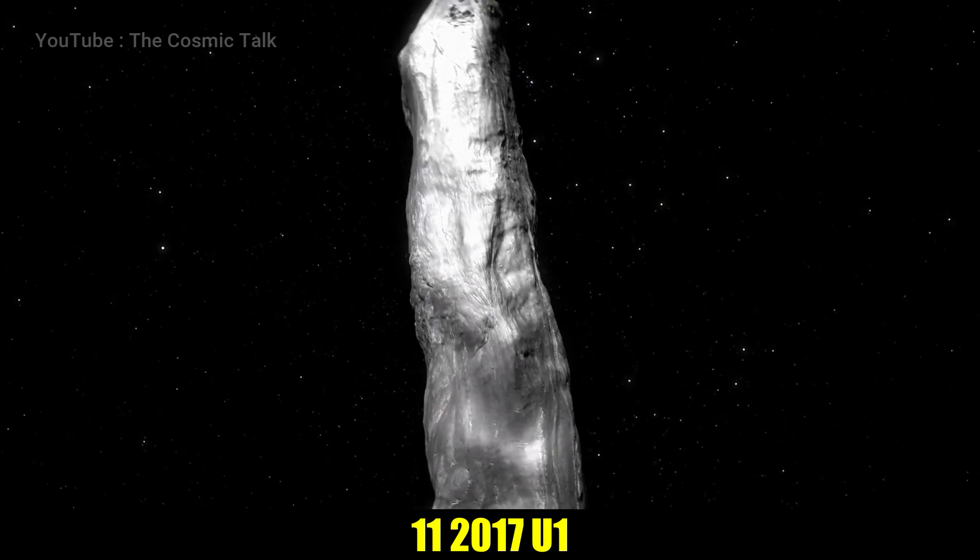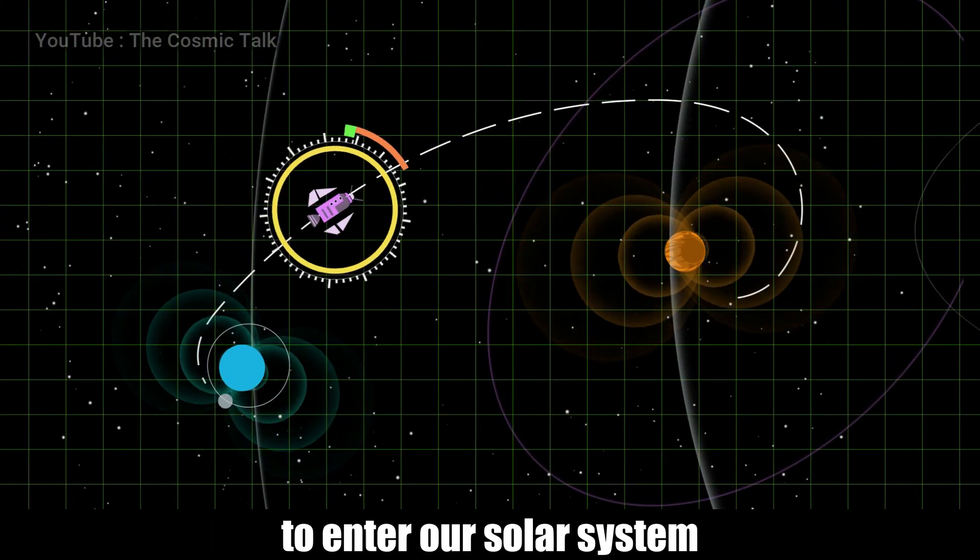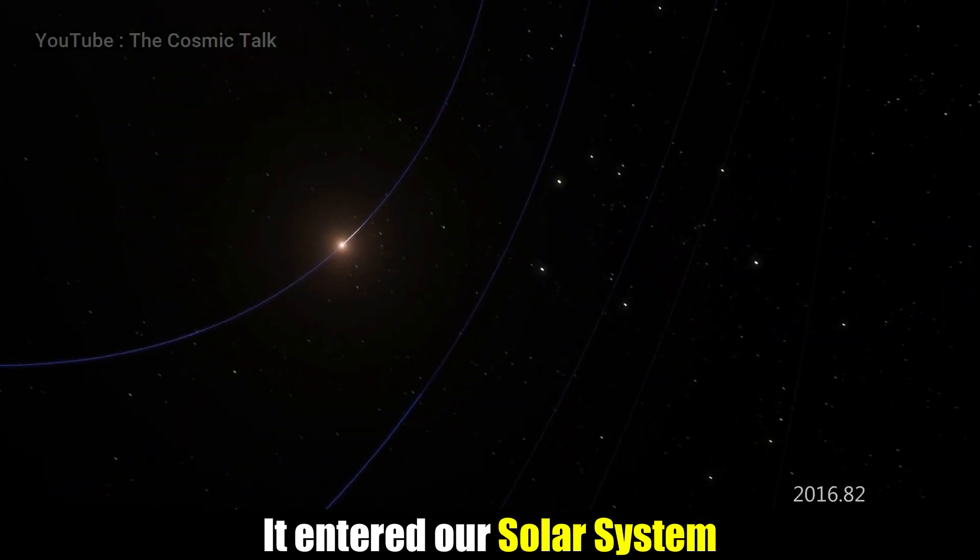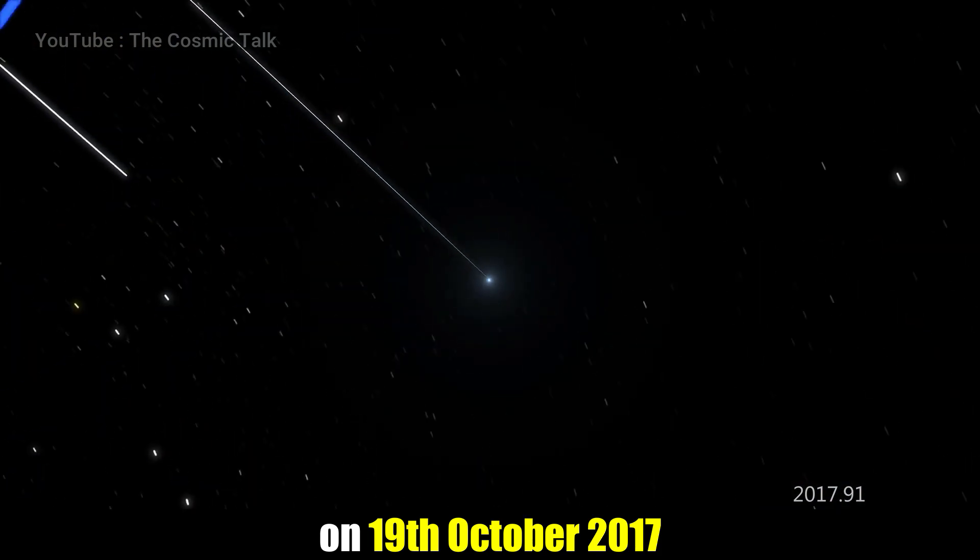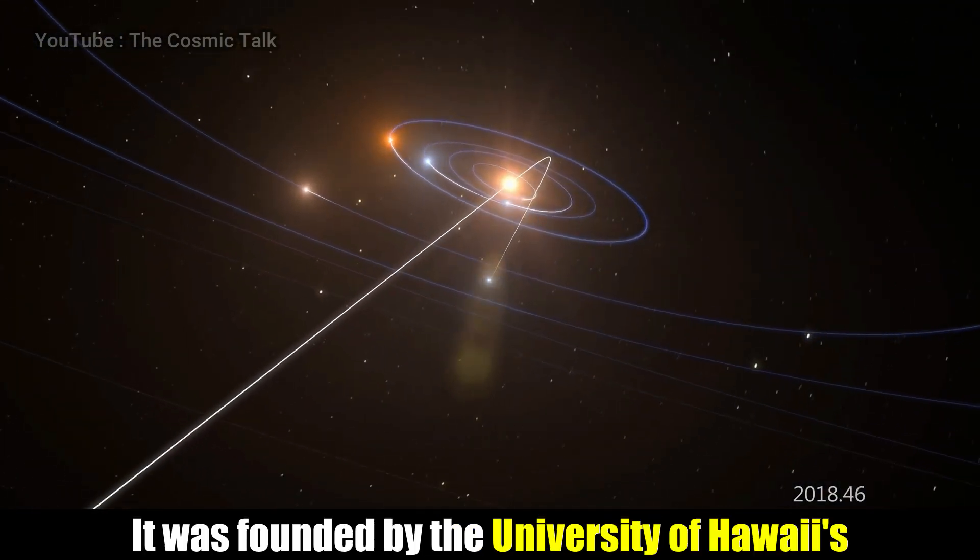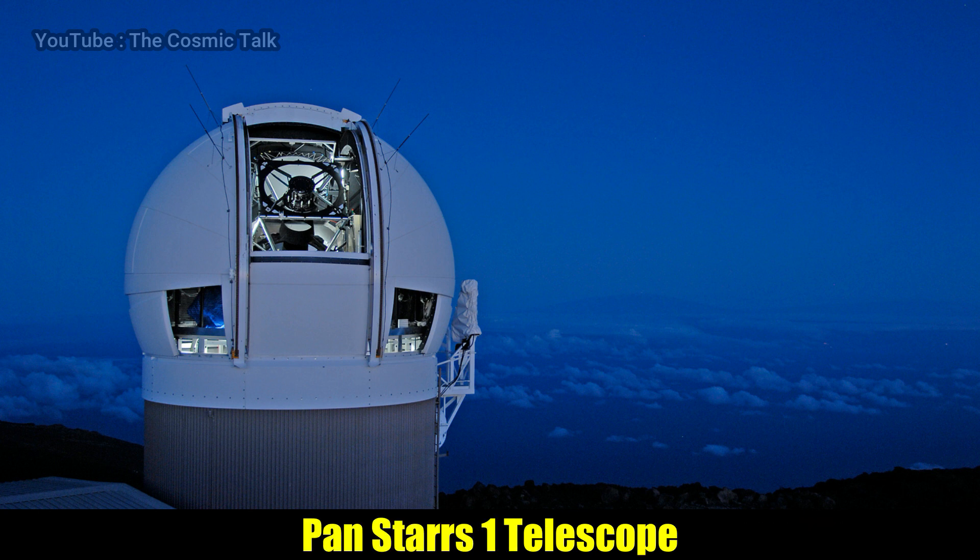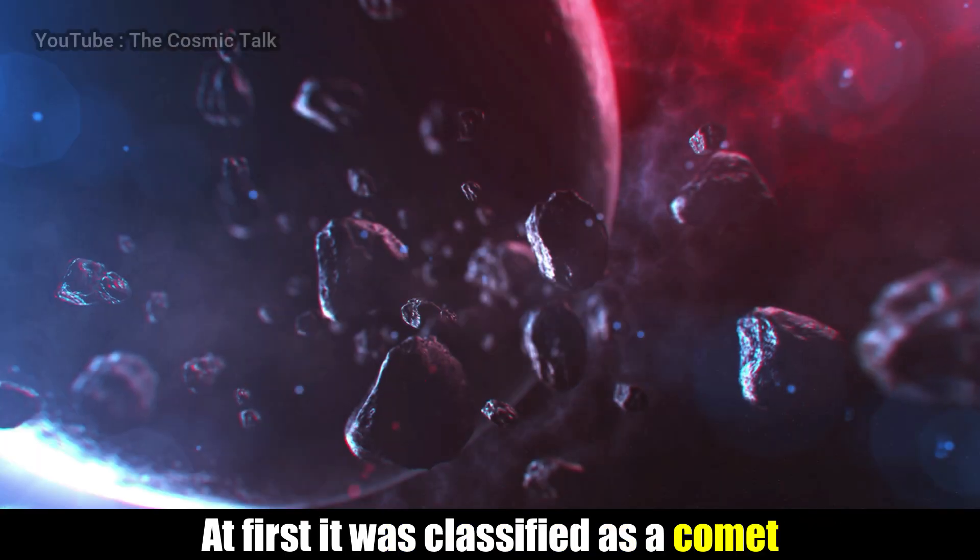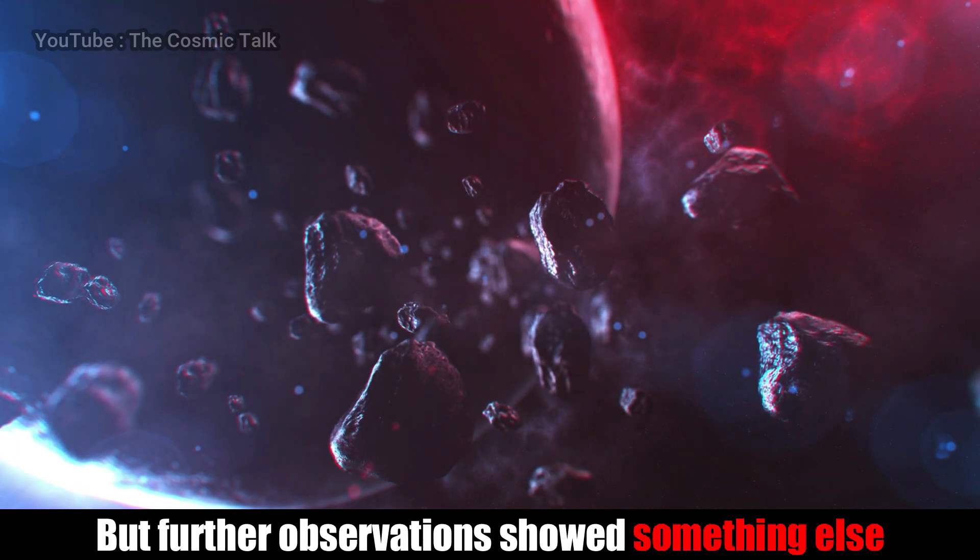The name of this object is 112017 U1. It is the first known interstellar object to enter our solar system. It entered on October 19th, 2017 and then left. It was found by the University of Hawaii's Pan-STARRS-1 telescope. At first it was classified as a comet, but further observations showed something else.